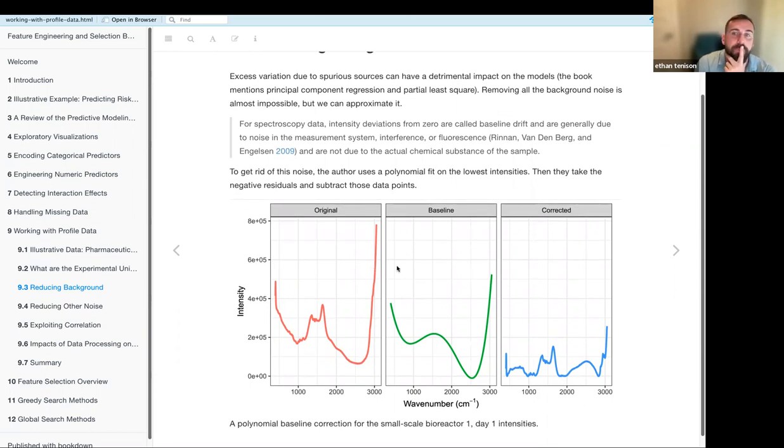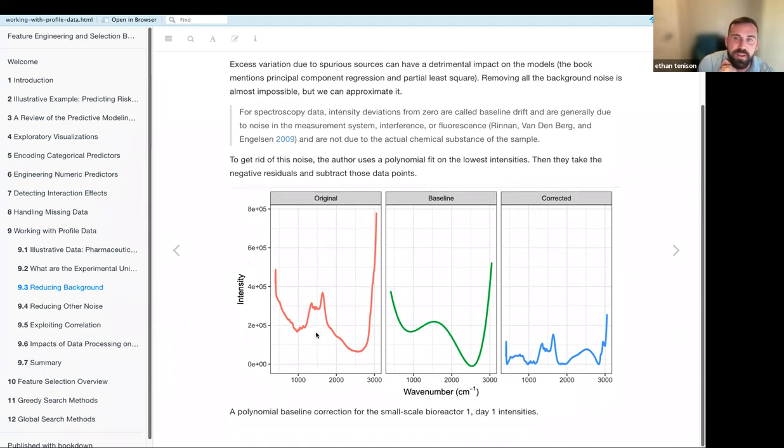And so this is just, I think this is just one bioreactor, this plot right here. So here's the original measurement for wavelength and intensity. And you see how it has occasionally these jagged changes, and then sometimes it's very smooth. And in order to pull out the baseline drift, they fit a polynomial, they do a polynomial fit on the lowest, so the most negative residuals. And so that's what you see right here in the middle. And then they subtract that out from the original measurements. And you get this corrected curve here, which looks like it has more descriptive information, perhaps.